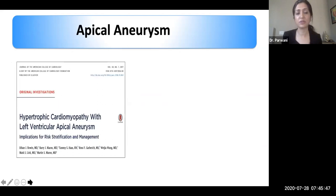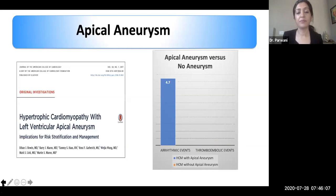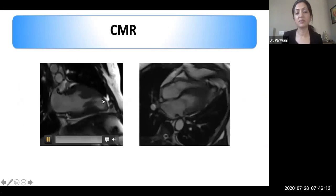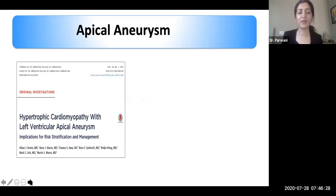When looking at apical aneurysm, two important complications to remember: first, arrhythmic events due to VT from scarring or fibrosis of the apex; second, thromboembolic events — clots can hide in these aneurysmal cavities. If not detected and treated, the patient can suffer stroke-like symptoms. A case was encountered where a patient with apical aneurysm had not been treated with anticoagulation and suffered a major CVA.